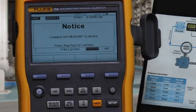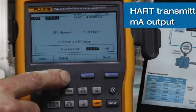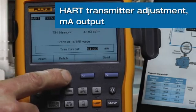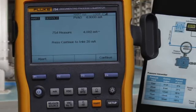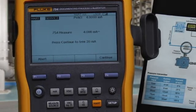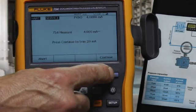First, we're going to perform the output trim, fetch the 4 milliamp value, and send to make the adjustment. Continue to adjust the 20 milliamp point, fetch, and send.